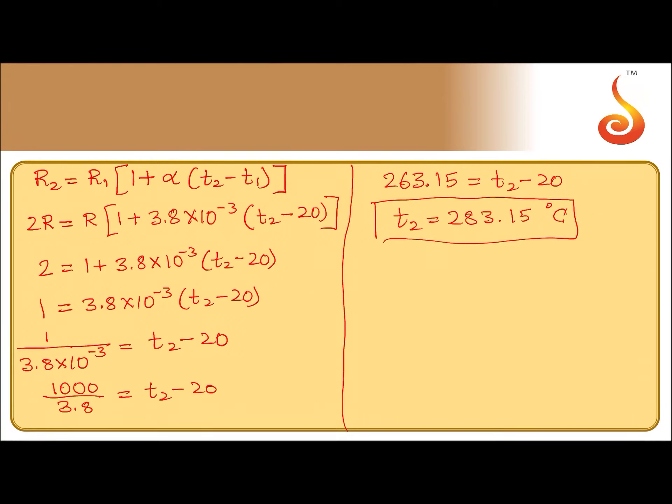This is the temperature at which the silver conductor's resistance becomes double that at 20 degrees Celsius. The final answer is 283.15 degrees Celsius.